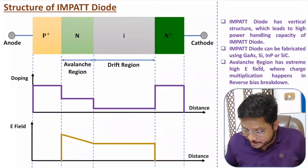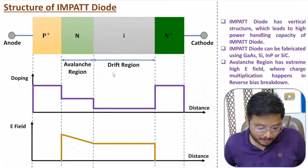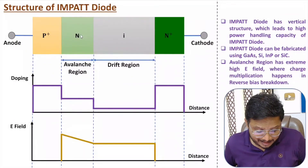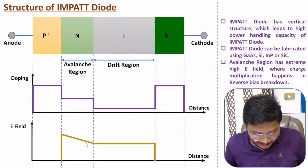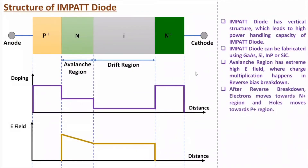The avalanche region has extreme high electric field, causing multiplication of charge carriers. After reverse breakdown, electrons move toward the n+ region and holes move toward the p+ region. The intrinsic layer serves as the drift region for electrons, while on the p+ side there is no separate drift region. Humongous current flows after reverse breakdown due to this avalanche effect.